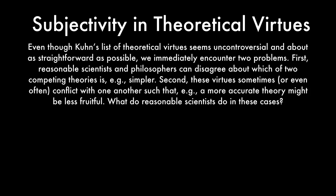Even though Kuhn's list of theoretical virtues seems uncontroversial and about as straightforward as possible, we immediately encounter two problems. First, reasonable scientists and philosophers can disagree about which of two competing theories is, for example, simpler. Second, these theoretical virtues sometimes — or even often — conflict with one another, such that, for example, a more accurate theory might be less fruitful. What do reasonable scientists actually do in these sorts of cases?